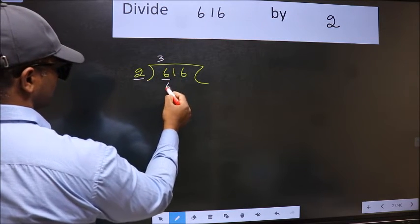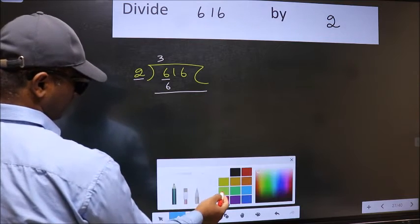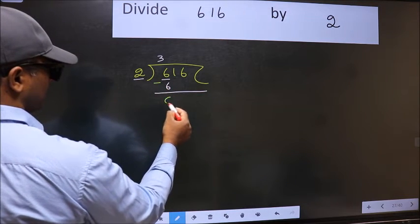2 times 3 is 6. Now we should subtract. We get 0.